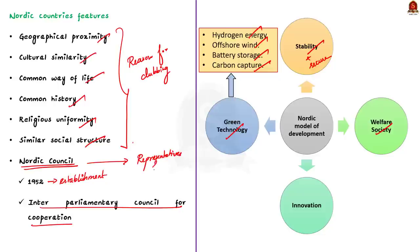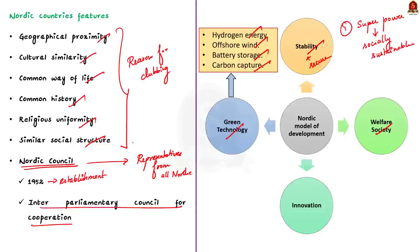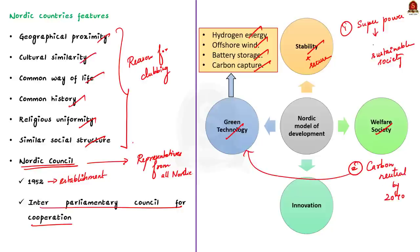The Nordic countries are at the forefront of developing new green technologies like hydrogen energy, offshore wind farms, battery storage, and carbon capture. India is trying to engage with the Nordic countries because India aims to become the next superpower and can learn from the Nordic economic model to develop a welfare-based socially sustainable society. India also plans to become carbon-neutral by 2070 and can get green technology solutions from Nordic countries.